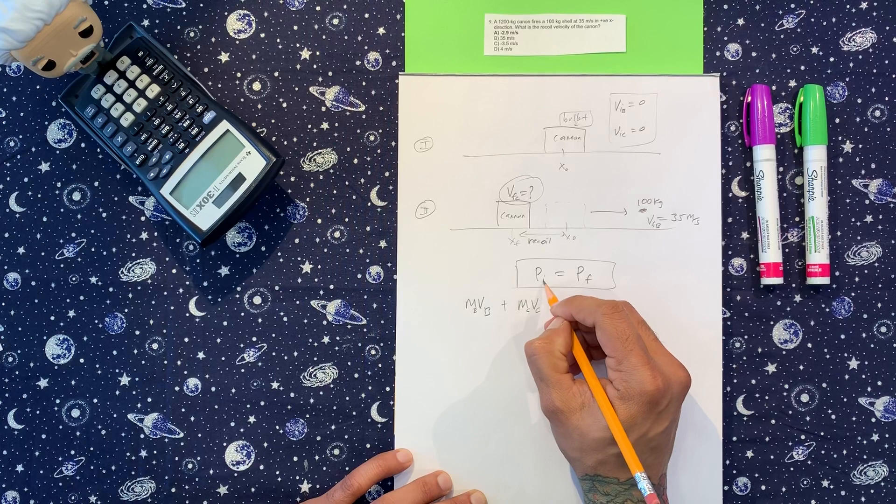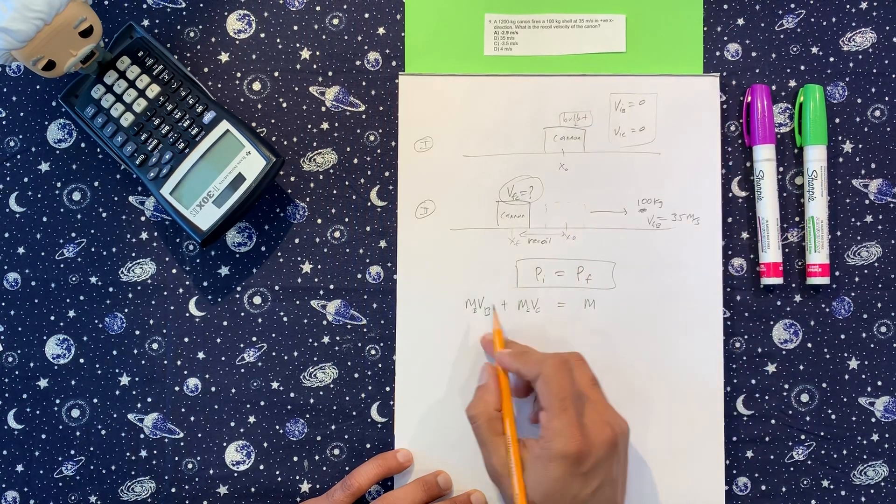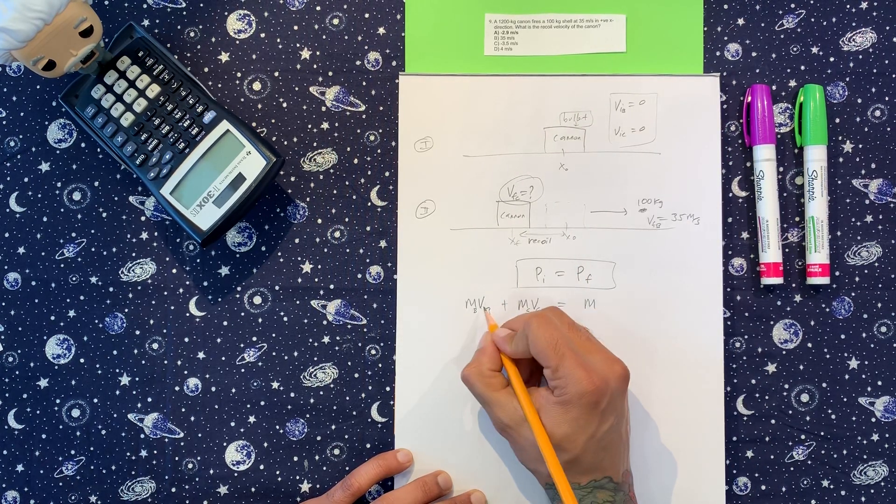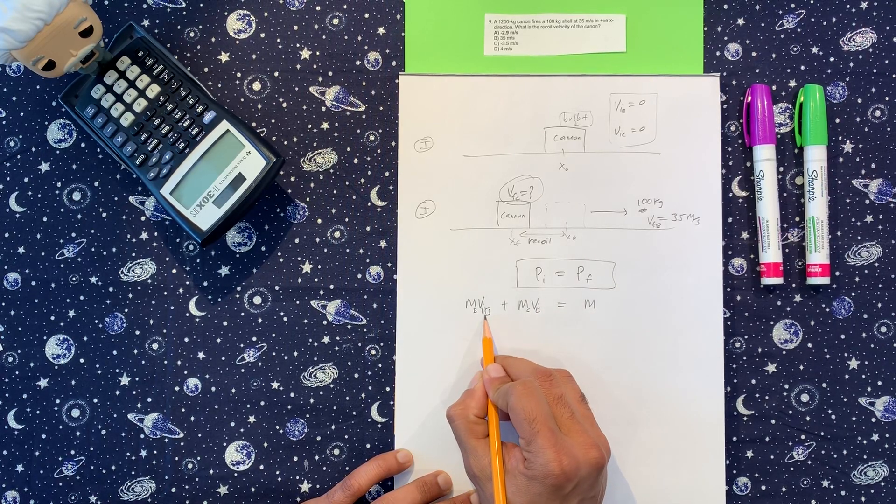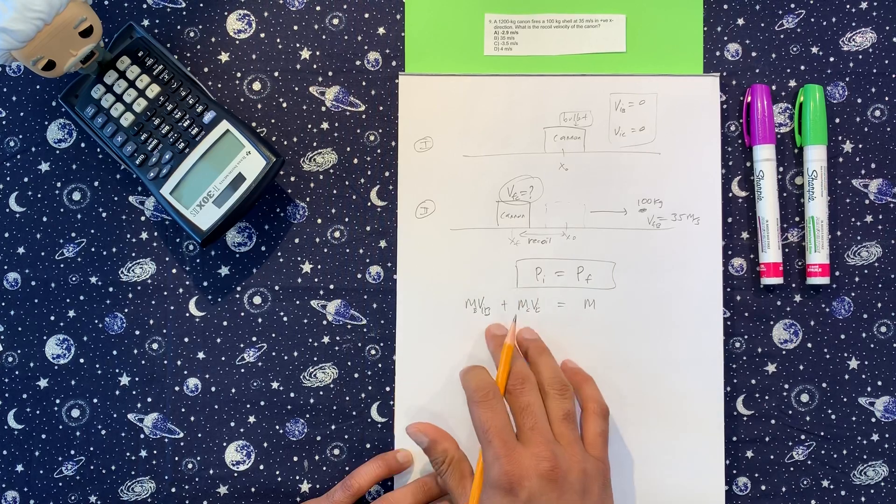So initially, we're going to look at what's going on here. So initially, I'm going to put a little I here. So initial velocity of the bullet, initial velocity of the cannon. That's this side.